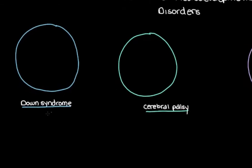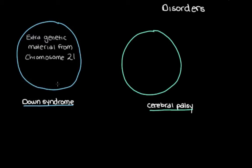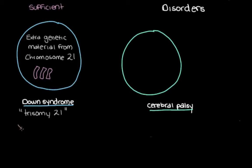Looking at Down syndrome: it is caused by extra genetic material from chromosome 21. This usually happens because the person has three copies of chromosome 21 rather than two — you may have heard this referred to as trisomy 21, where 'tri' means three and 'somy' refers to chromosome. When someone has this extra genetic material from chromosome 21, they will develop Down syndrome. We call this type of cause a sufficient cause, where sufficient means that every time this happens, the outcome — Down syndrome — will always follow.